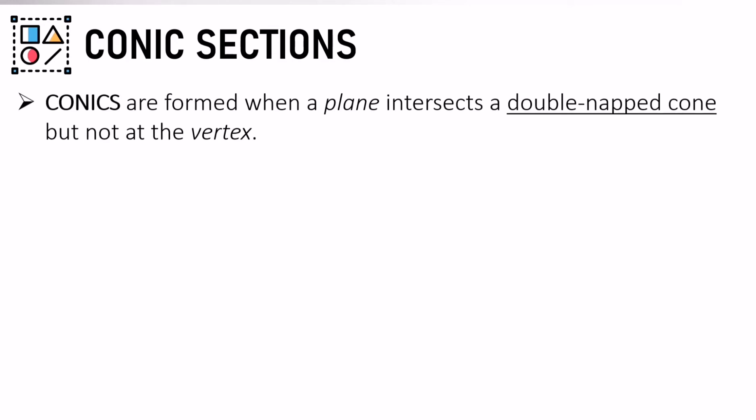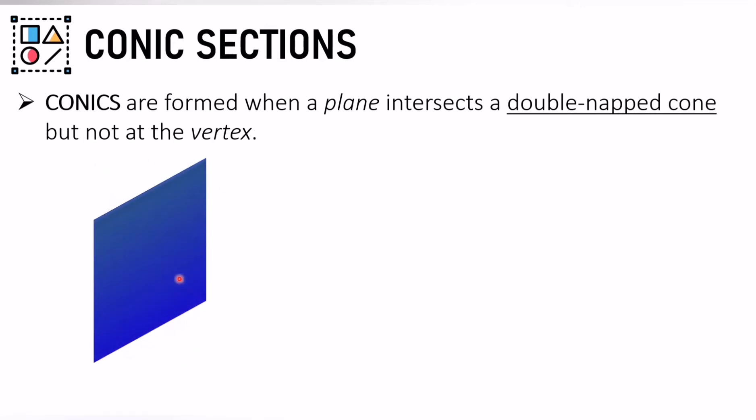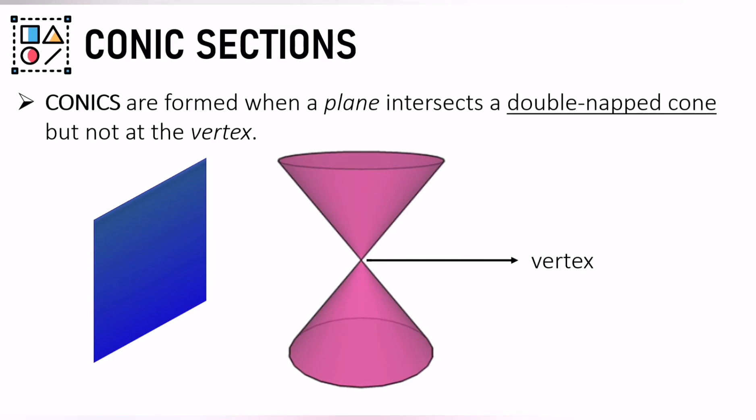Conics are formed when a plane intersects a double-napped cone but not at the vertex. So for example, if you have a plane here and you have a double-napped cone, if the plane intersects this but not at the vertex, then you form a conic.